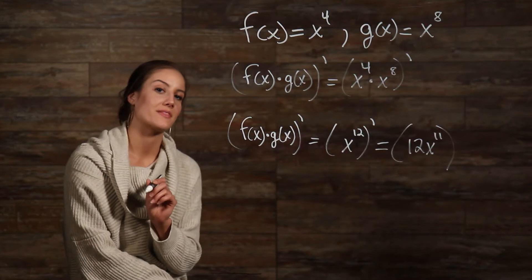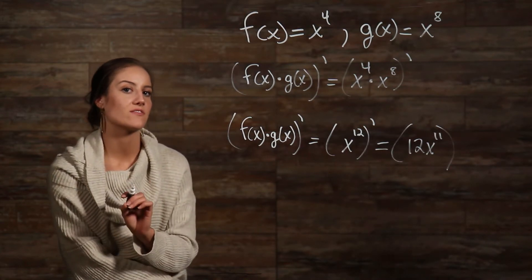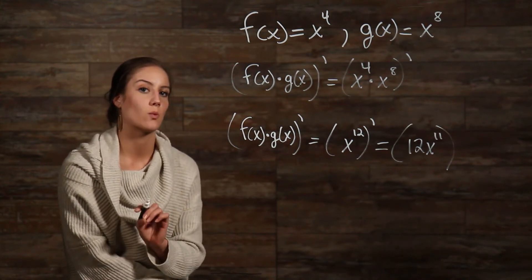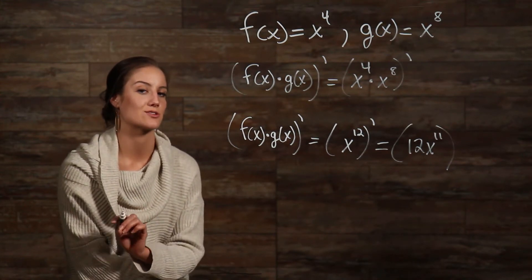Now, let's try the other method that I mentioned. Let's take the derivative of the two terms being multiplied and then multiply them together. For either of these methods to work, we would need to get the same answer using either method.